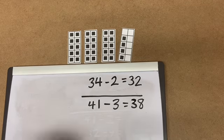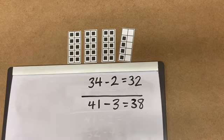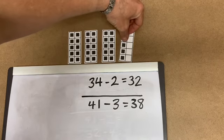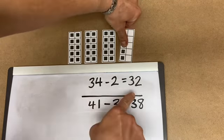To subtract 1s from a number, 34 take away 2, it's counting back by 1s. As we can see, 33 and then 32.